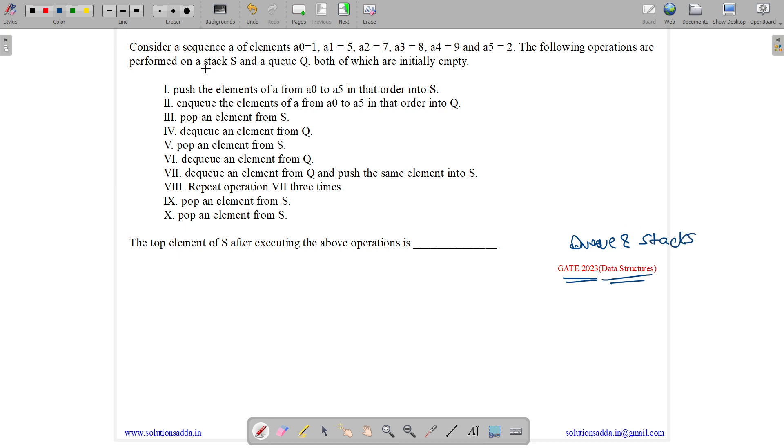So the question states, consider a sequence A of elements. So we have 5 elements: A0 as 1, A1 as 5, A2 as 7, A3 as 8, A4 as 9, and A5 as 2.